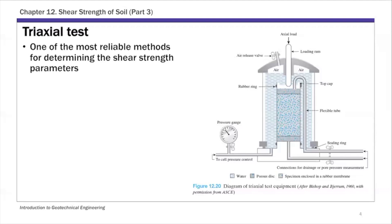Looking at this diagram of triaxial test equipment, at the center you have your soil specimen. This is typically 1.4 inch by 3 inch, or 36 millimeter by 76 millimeter — a cylindrical shaped specimen. So in SI units, the diameter is 36 mm and the height is 76 mm.